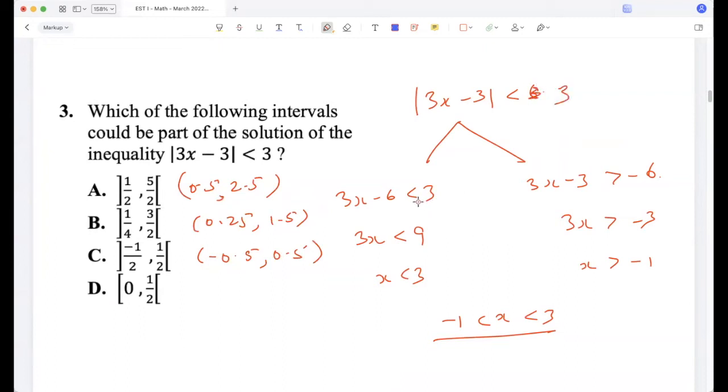So 3x minus 3 is less than 3, 3x less than 6, x less than 2. And 3x greater than minus 3, then 0. So x greater than 0. So between 0 and 2.